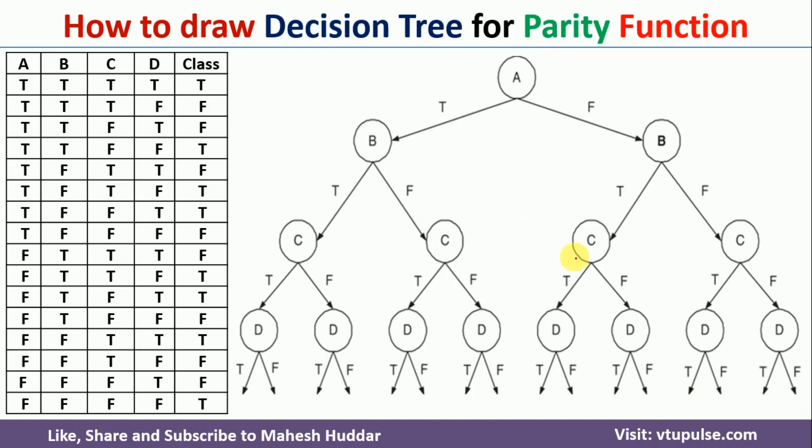Now, once you draw this particular part of the decision tree, we need to assign the labels or the classes for this one. So how can we assign that? You can see here that if A is true, B is true, C is true and then D is true, for that one class is true here. So we need to assign true here.